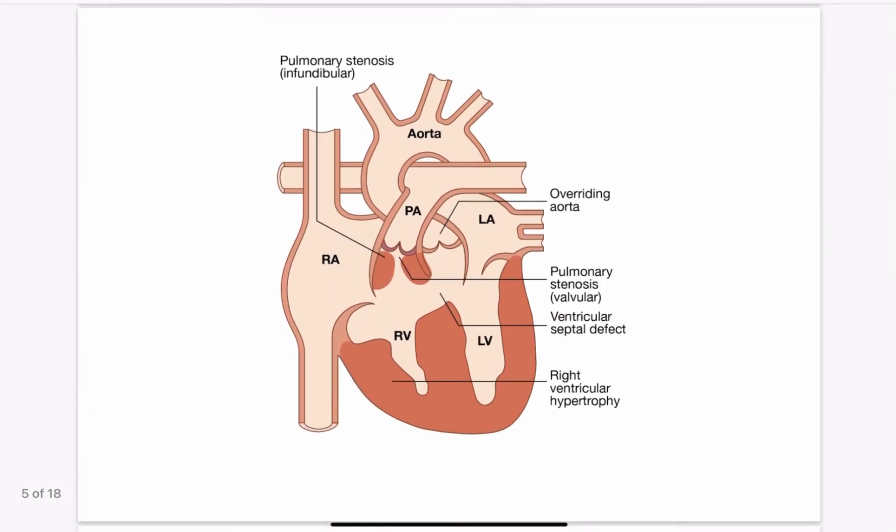Normally if there is a septal defect then blood will flow from left side to right side due to high pressure in the left side of the heart. This is called left to right shunting. But in Tetralogy of Fallot it's opposite. That means there is right to left shunting. It's because more blood is pooling inside the right ventricle due to pulmonary stenosis. This increases the pressure inside the right ventricle and together with its hypertrophy the pressure inside the right ventricle increases so much so that it exceeds the pressure of left ventricle. And so the blood flows from right ventricle to left ventricle. This is called right to left shunting.